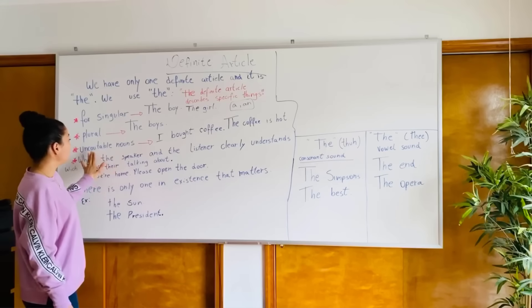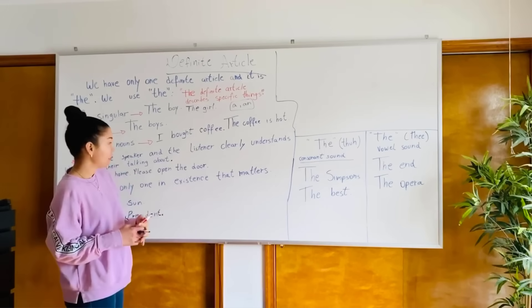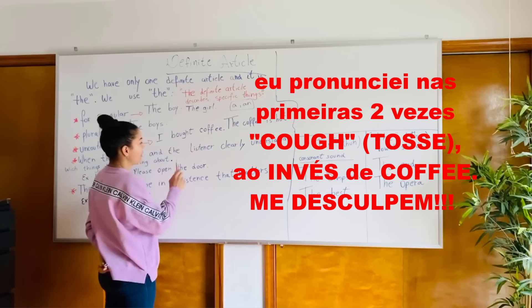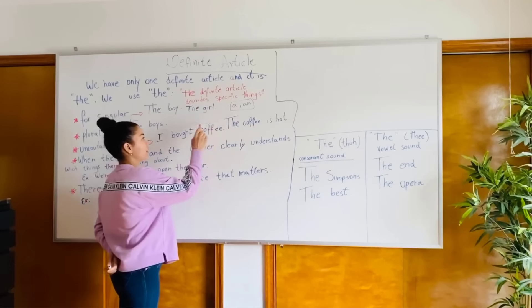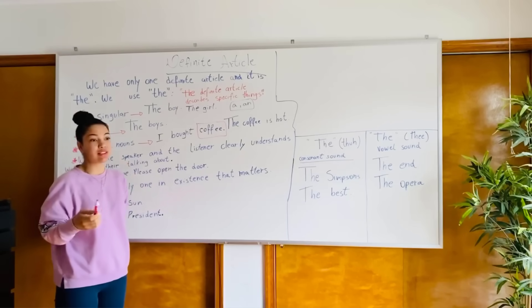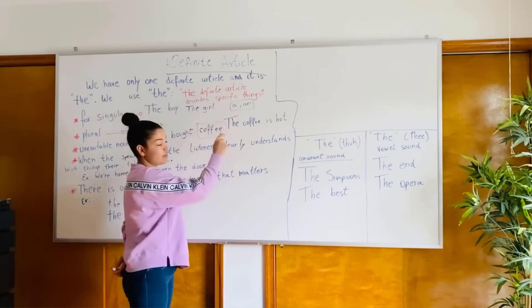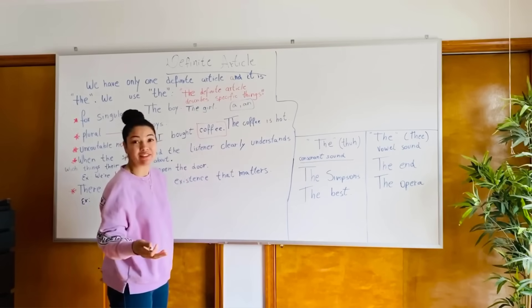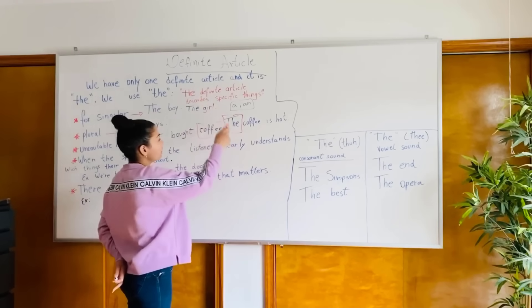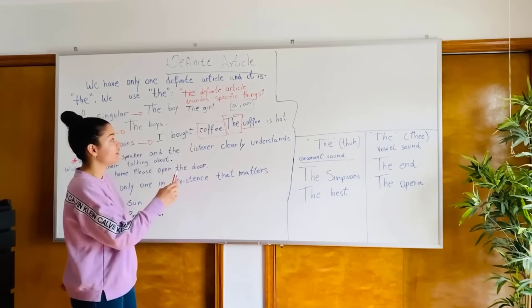We also have uncountable nouns — substantivos não contáveis. I put an example here for you. 'Coffee' — café — is an uncountable noun; we can't count the quantity of coffee. So: 'I bought coffee.' The next time you talk about that coffee, in a sentence or in writing, you are required to use the definite article: 'The coffee is hot.'